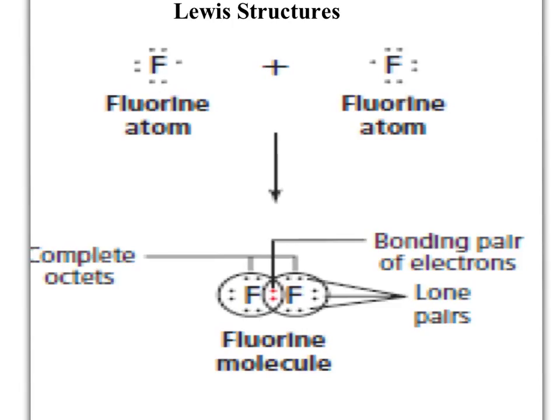Here's an example. Fluorine is in family 7A and has seven valence electrons, so each fluorine atom needs to gain one electron to be stable. If it were going to bond with a metal, it could pick up that electron from the metal. But if one fluorine atom donates an electron to the other fluorine atom, that's great for the one that ends up with eight electrons, but not for the other — it would only have six electrons and be even less stable.